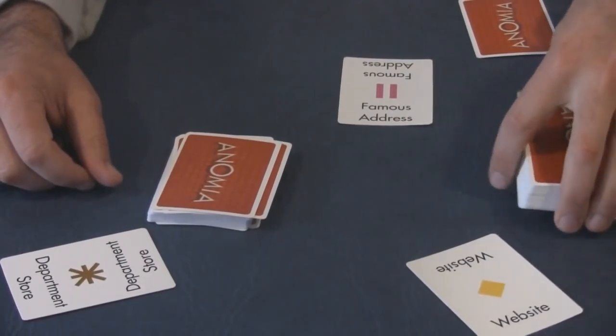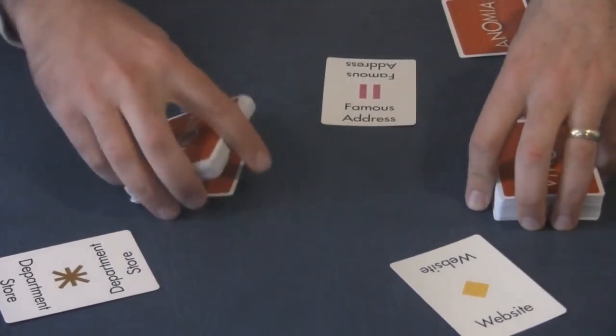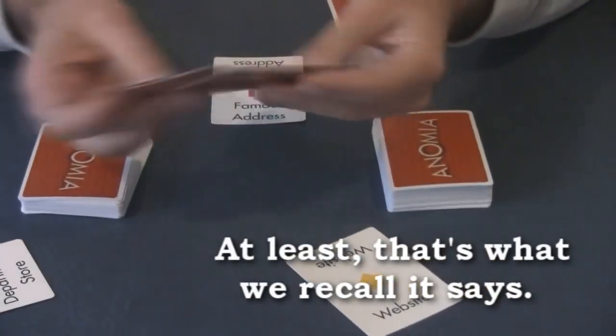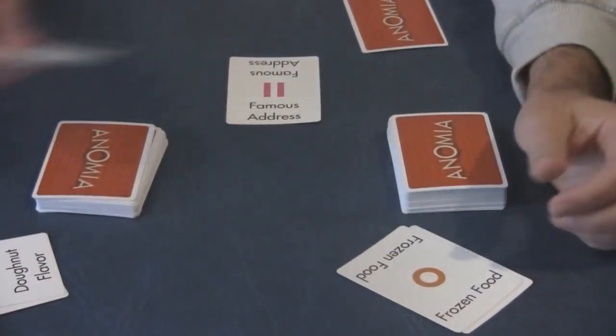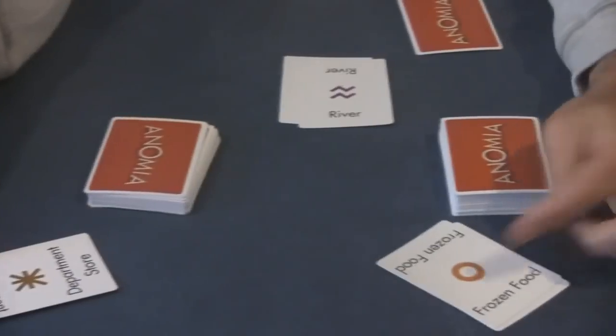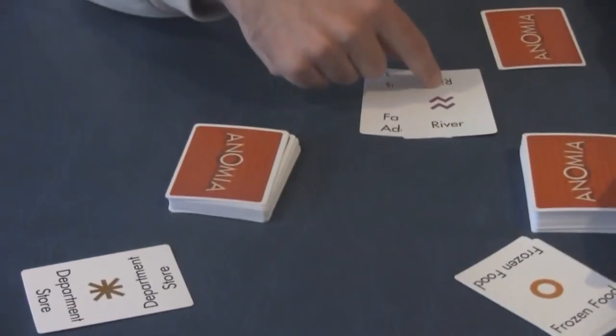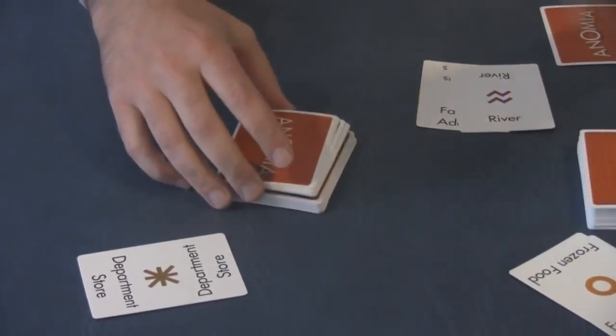Because the word anomia, according to the rules and to the designers of the game, is having a problem with recall. So there's a whole bunch of things that pop up, let's say, you know, a donut flavor and a frozen food. Those pop up, they have to name it off. The other tricky thing is if the donut flavor comes up on top of another card, say this person gets it, and the department store matches with somebody else, then you've got to keep going. So you've got to keep your eyes open for matching symbols.